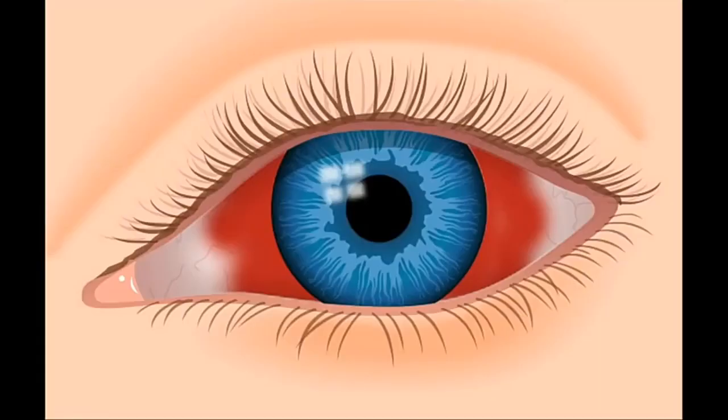This type of eye hemorrhage, often related to diabetes, can temporarily obscure vision. In addition to diabetes, sickle cell anemia and macular degeneration can cause vitreous hemorrhages.